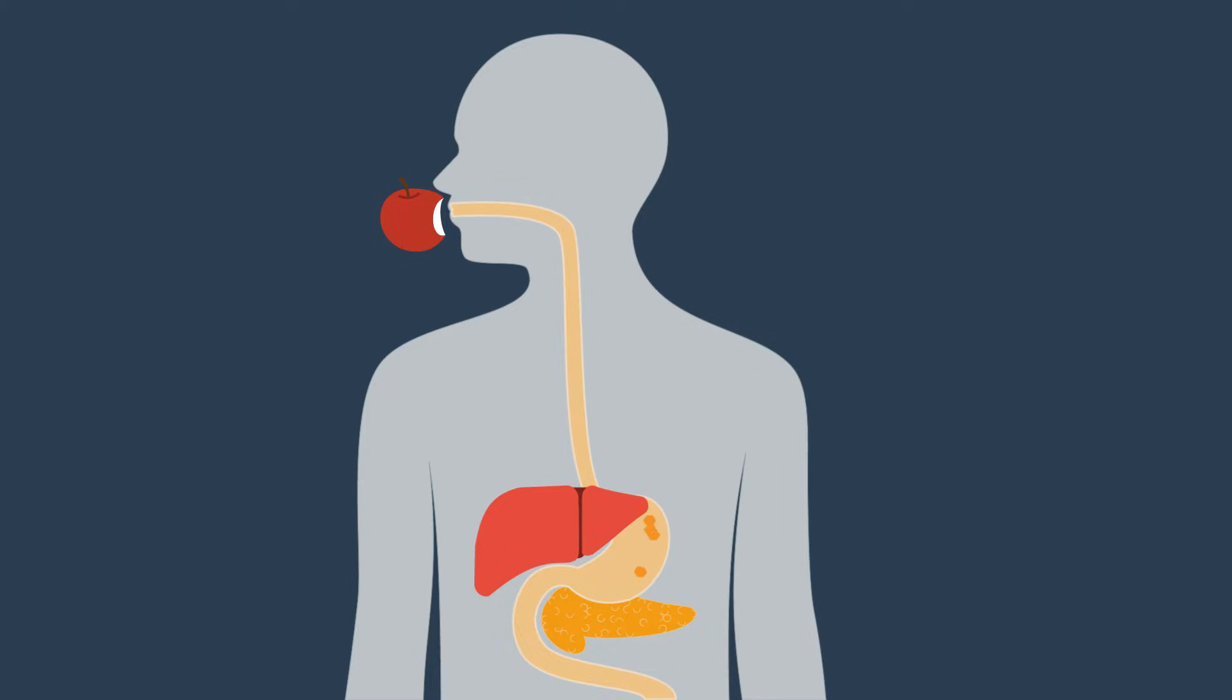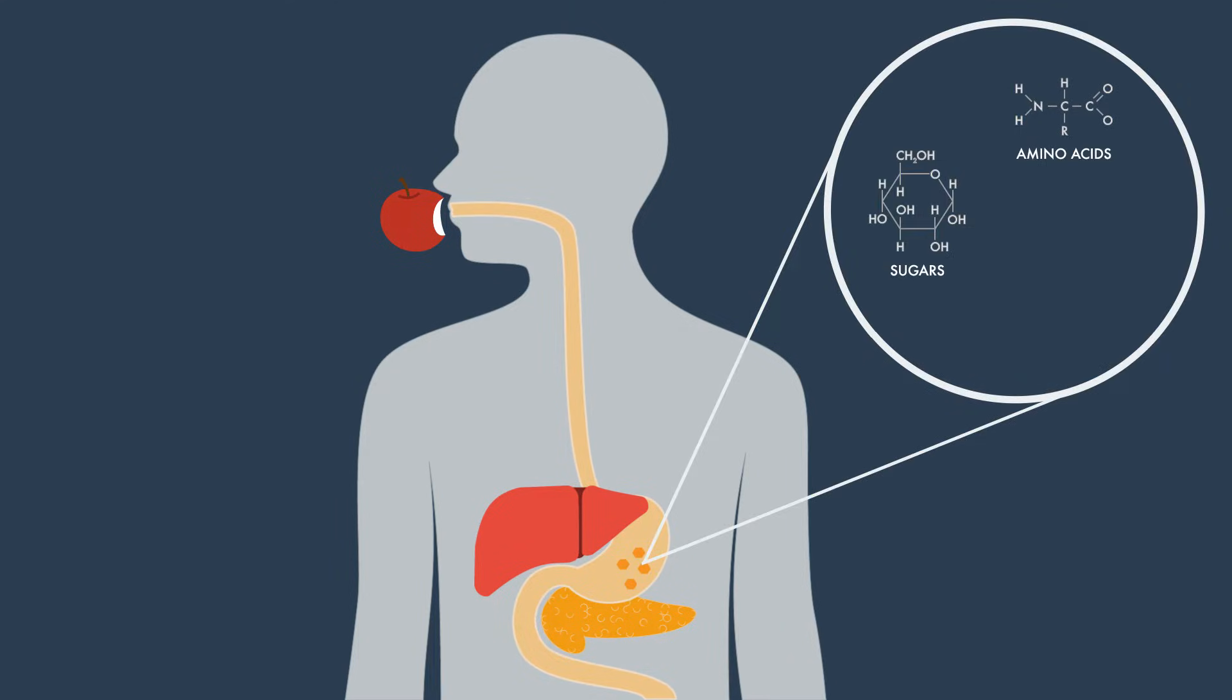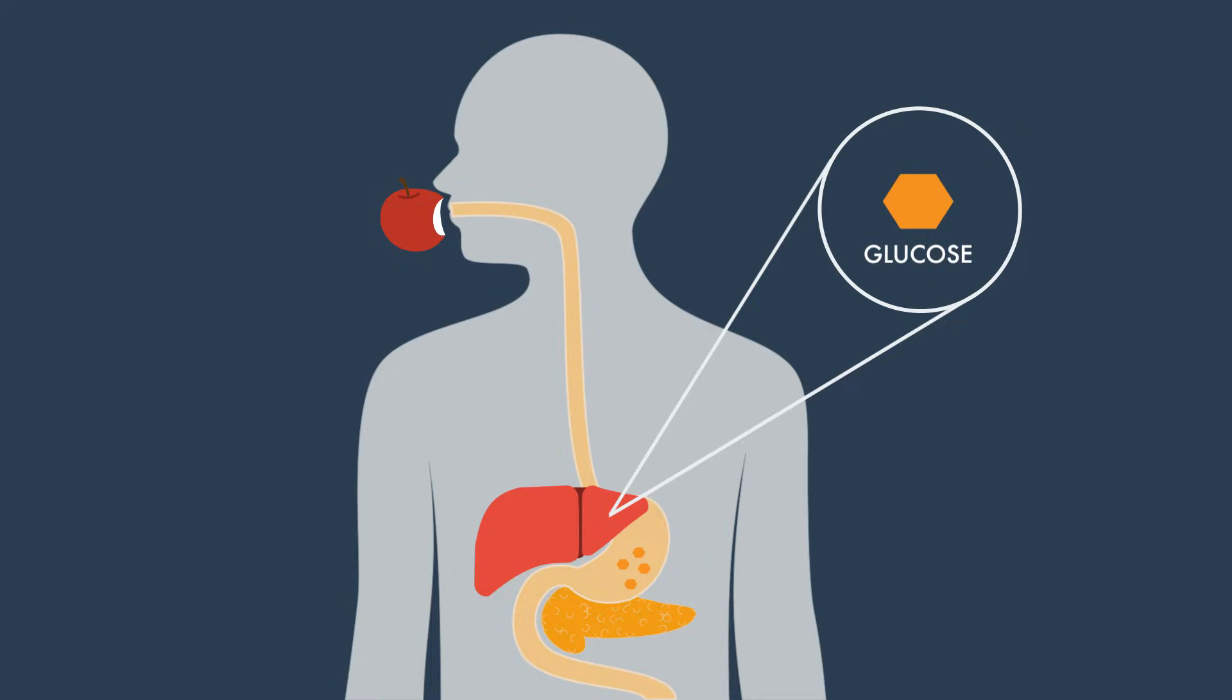Our bodies digest the food we eat into amino acids, sugars, and fatty acids. But how do the digested sugars get into our cells so they can be used for energy?